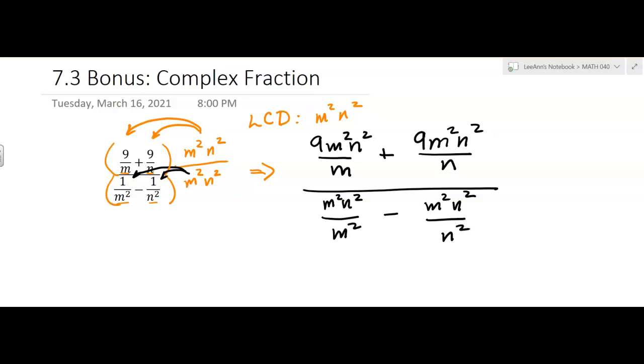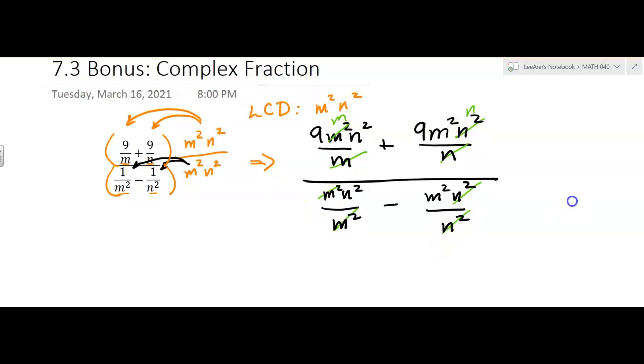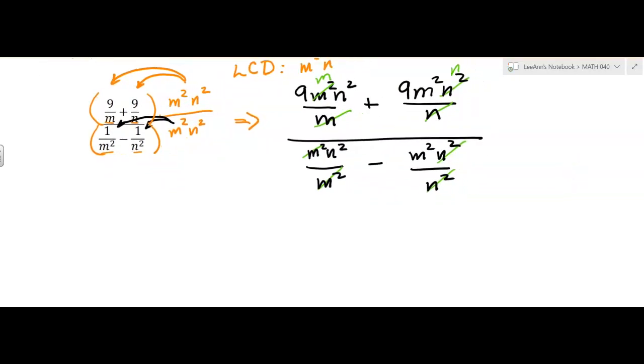Now, what happens that's exciting is all those little denominators are going to cancel now. So M goes into M squared, N goes into N squared, M squareds cancel there, and N squareds cancel there. So what do we have left?